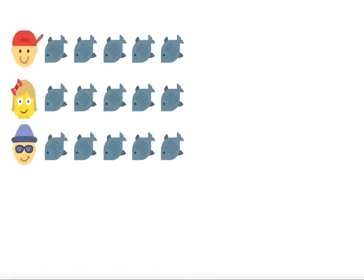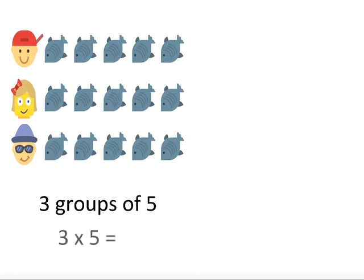A two-step problem has two parts that need solving. Let's look at an example. Three friends went fishing and they each caught five fish. How many fish altogether? This is a grouping question where we want to find a total, so we use multiplication. Our number sentence is three multiplied by five, which equals 15 fish altogether.